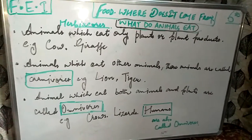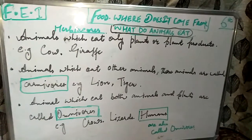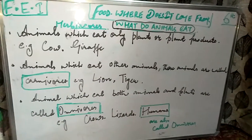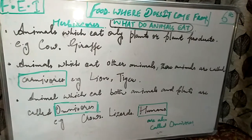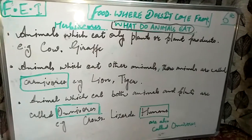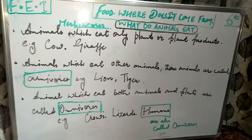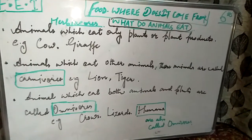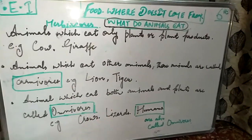Let me give you an example. A cow or a giraffe eats plants. Animals which eat only plants and plant products are called herbivores. So animals that consume only plants or plant products — what are they called? They are called herbivores.